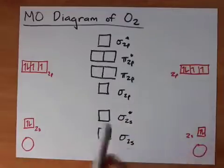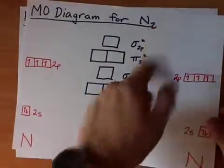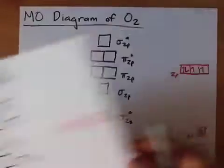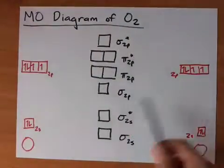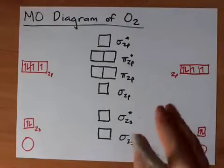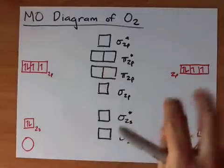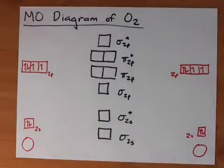In fact, all of the period 2 elements that are nitrogen and before it will look like this, and oxygen and after in period 2 will look like this. And again, it's due to the number of protons and the attraction that each of the individual molecular orbitals has for that nucleus.